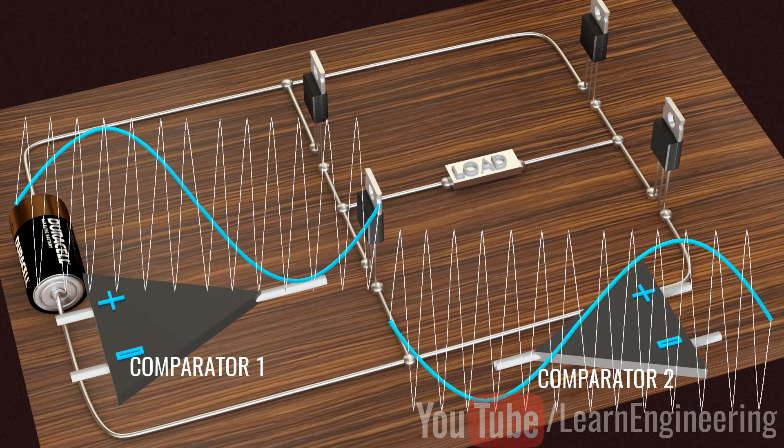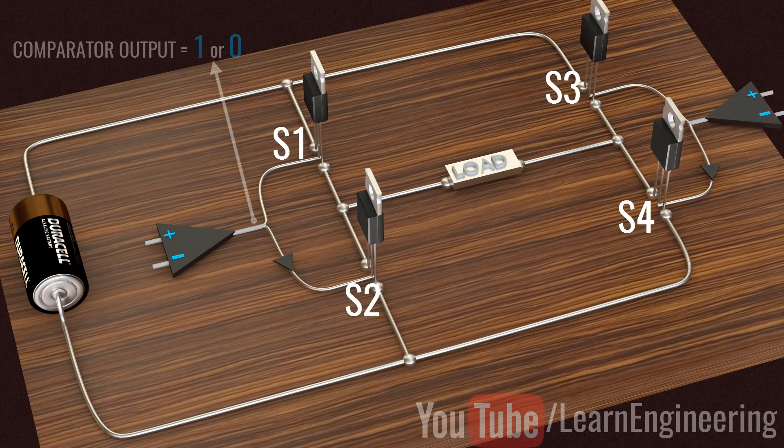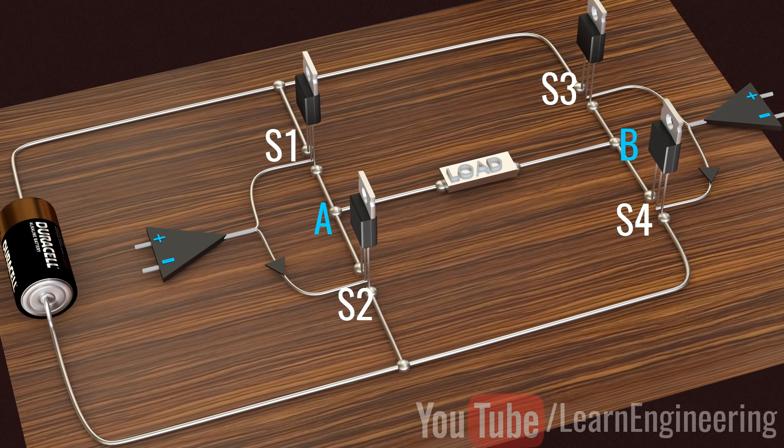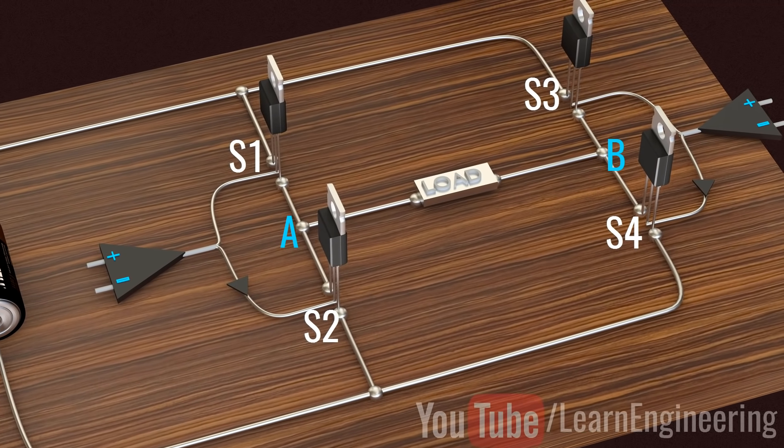The first comparator controls S1 and S2 switches and the second comparator controls S3 and S4. S1 and S2 switches determine voltage level at point A and the other two switches determine voltage level at point B.